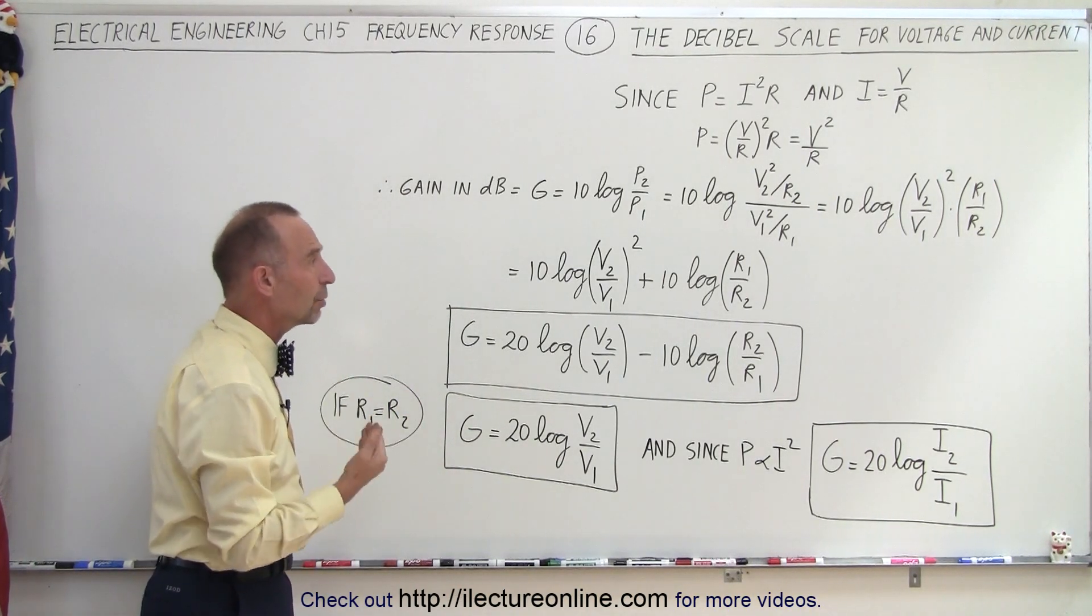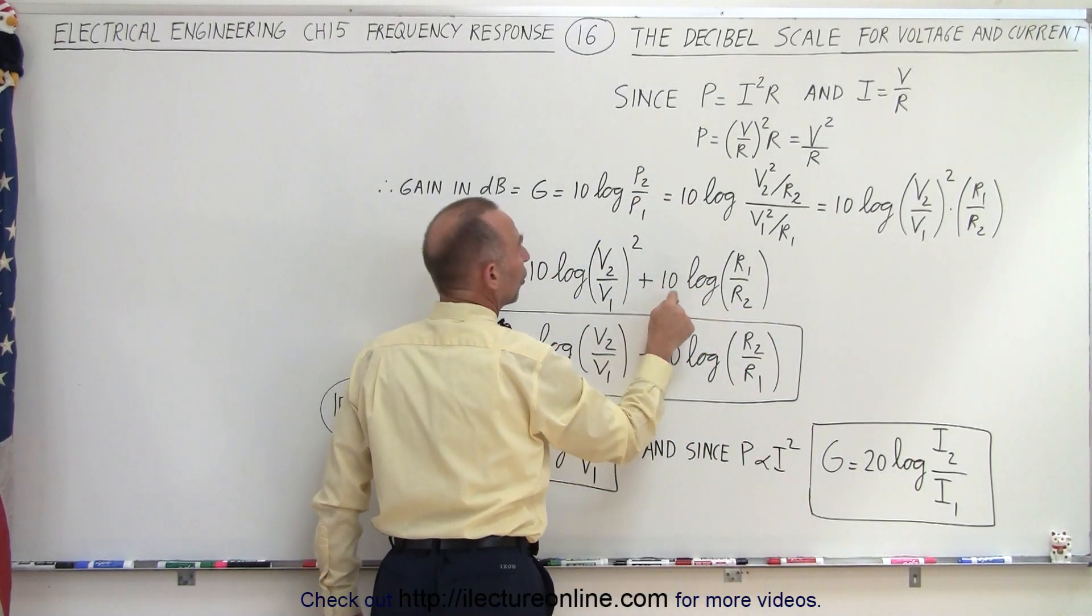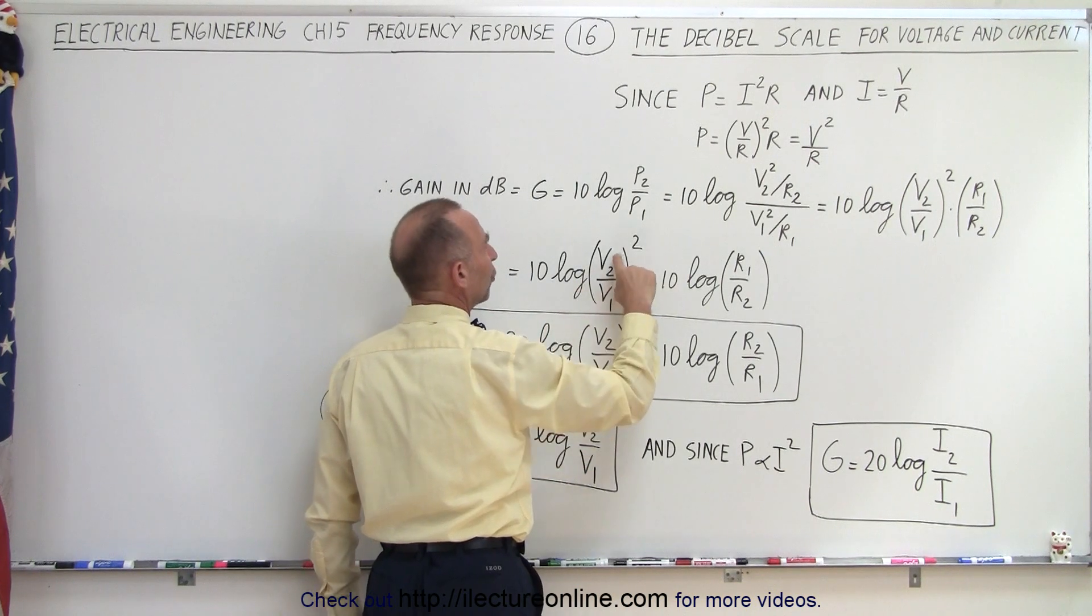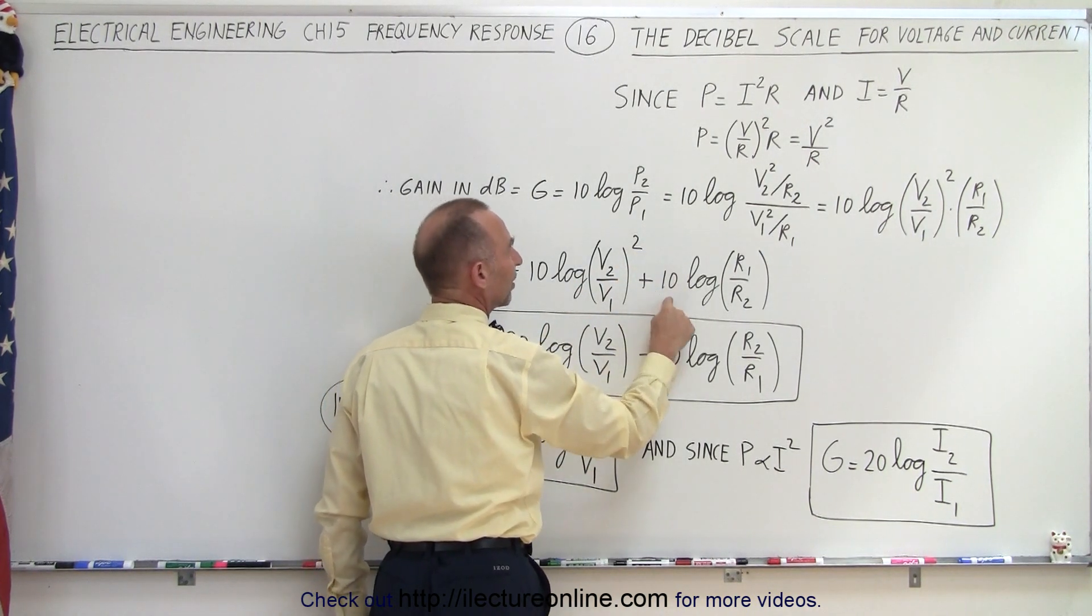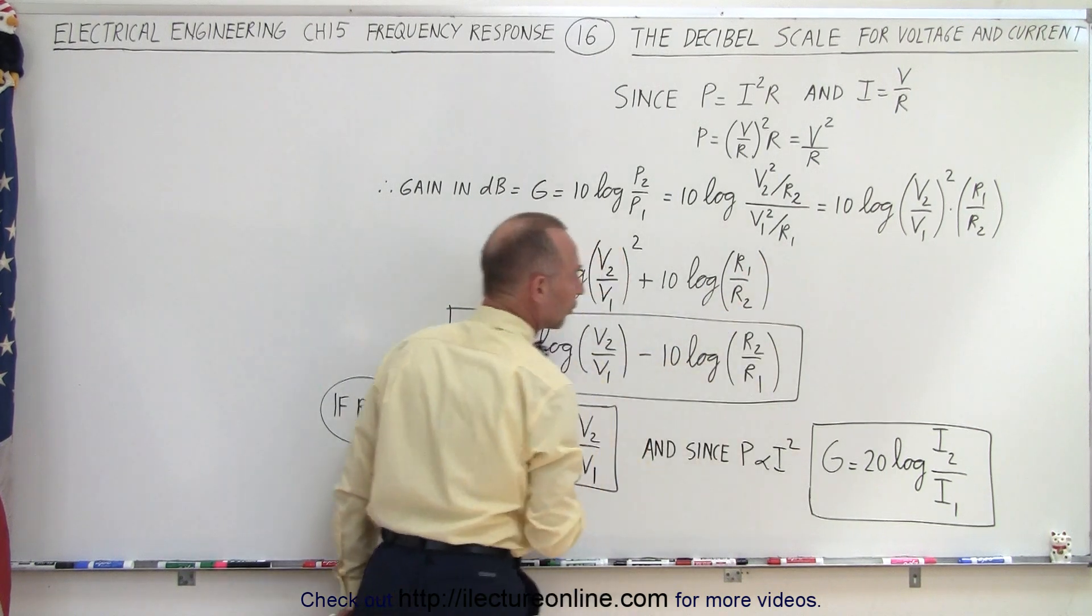And then using the rules of logarithms, the logarithm of a product is equal to the individual log sum together. So this becomes 10 times the log of the ratio of the voltage squared plus 10 times the log of the ratio of the resistances.